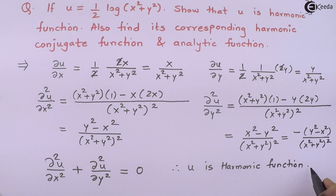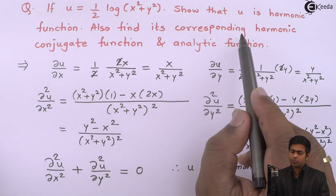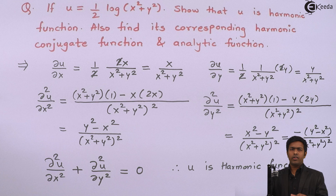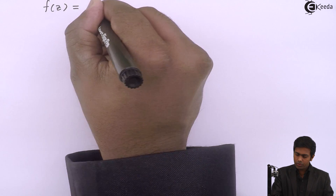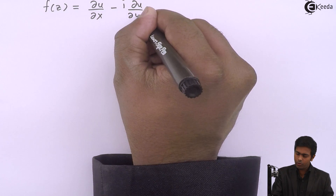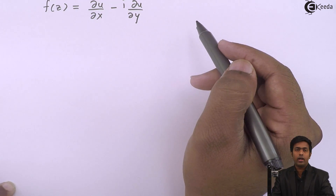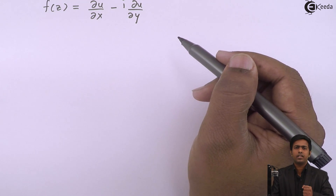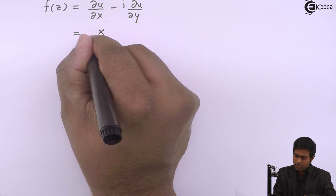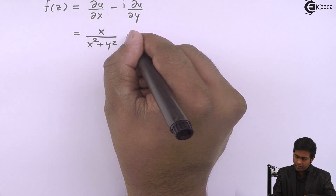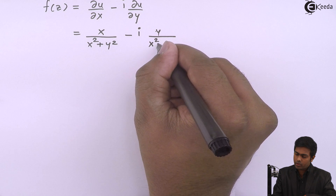Now we have to find the corresponding harmonic conjugate and analytic function. We will first find the analytic function. To get the analytic function, we use the property: f'(z) = ∂u/∂x − i·∂u/∂y. Substituting the values, ∂u/∂x = x/(x² + y²) and ∂u/∂y = y/(x² + y²). By integrating f'(z) we can get the analytic function f(z).